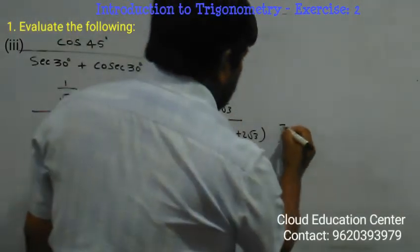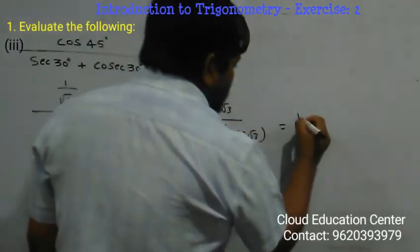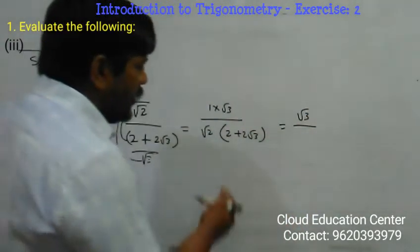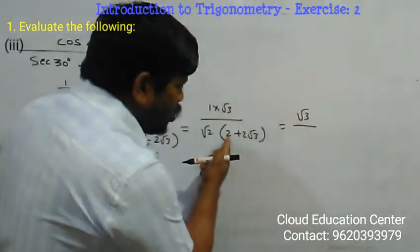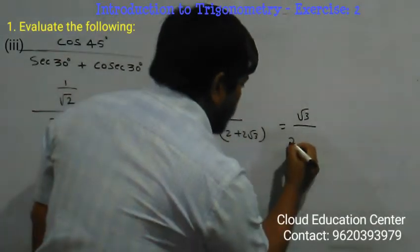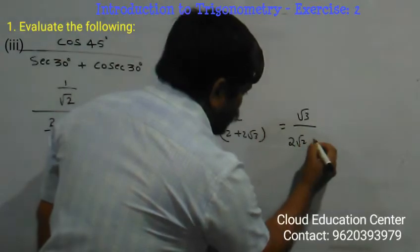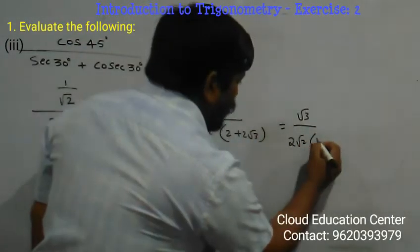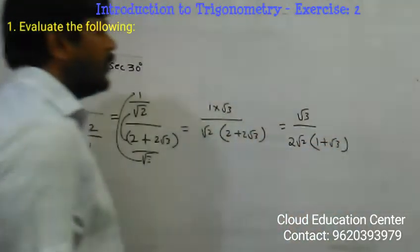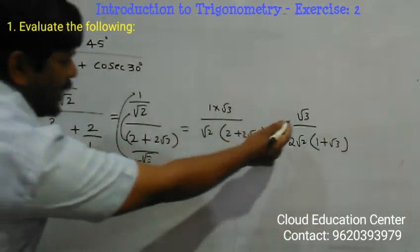It is equal to root 3 into 1 is root 3, divided by — here 2 is common, take 2 as common — and there is root 2 here, and it becomes 1 plus root 3.